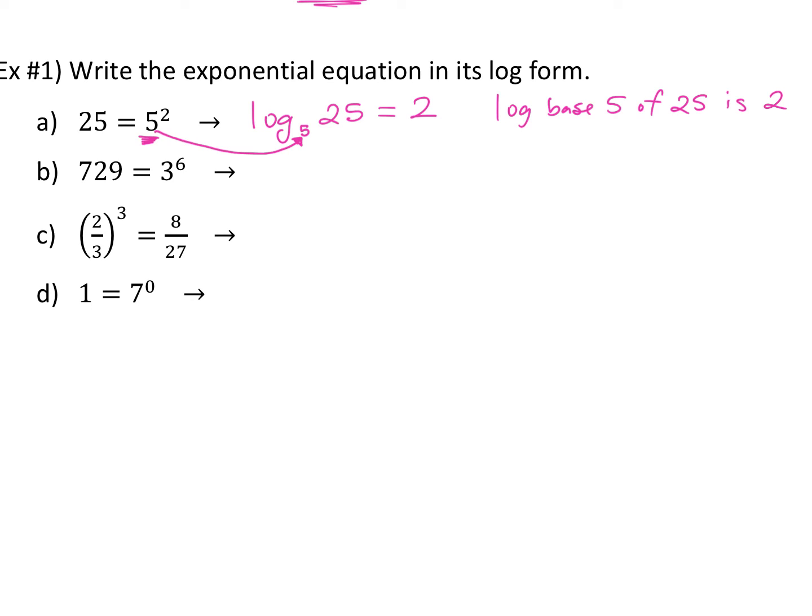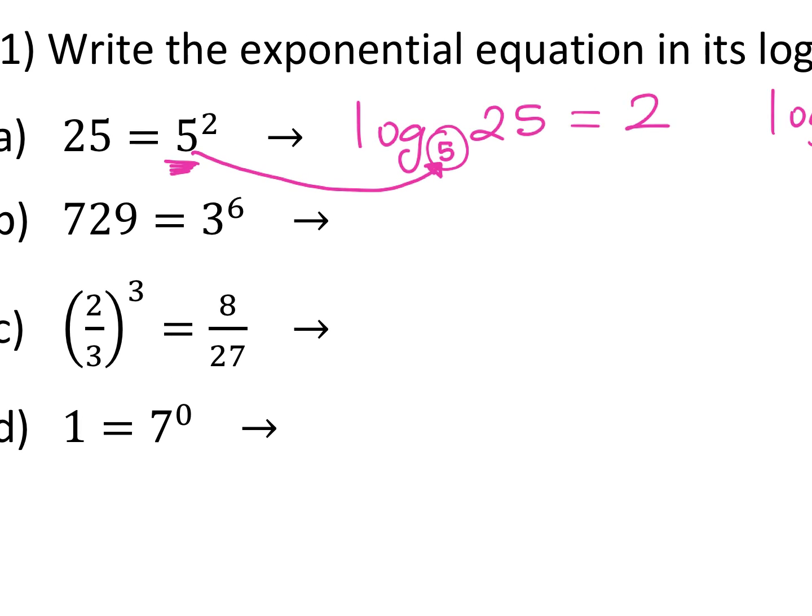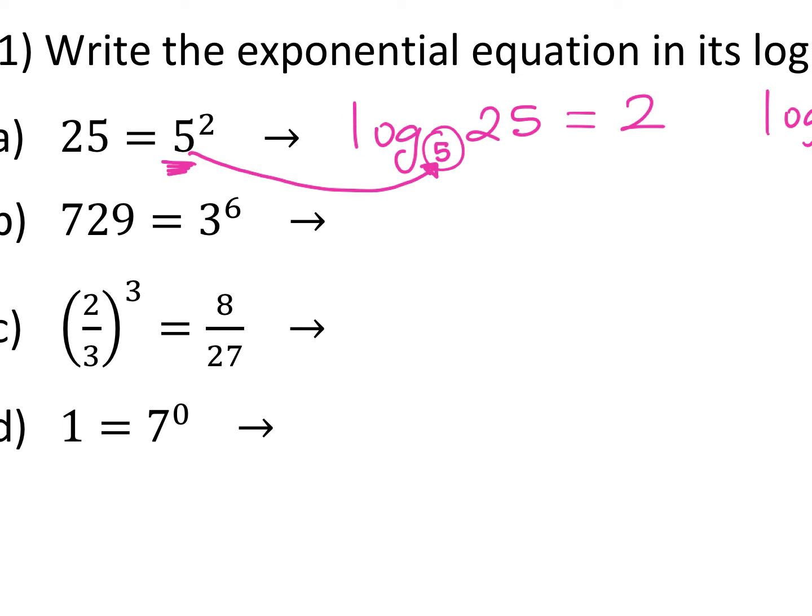Is that B or 5 after the log? It's a 5. This right here is a 5. Is that a better 5?